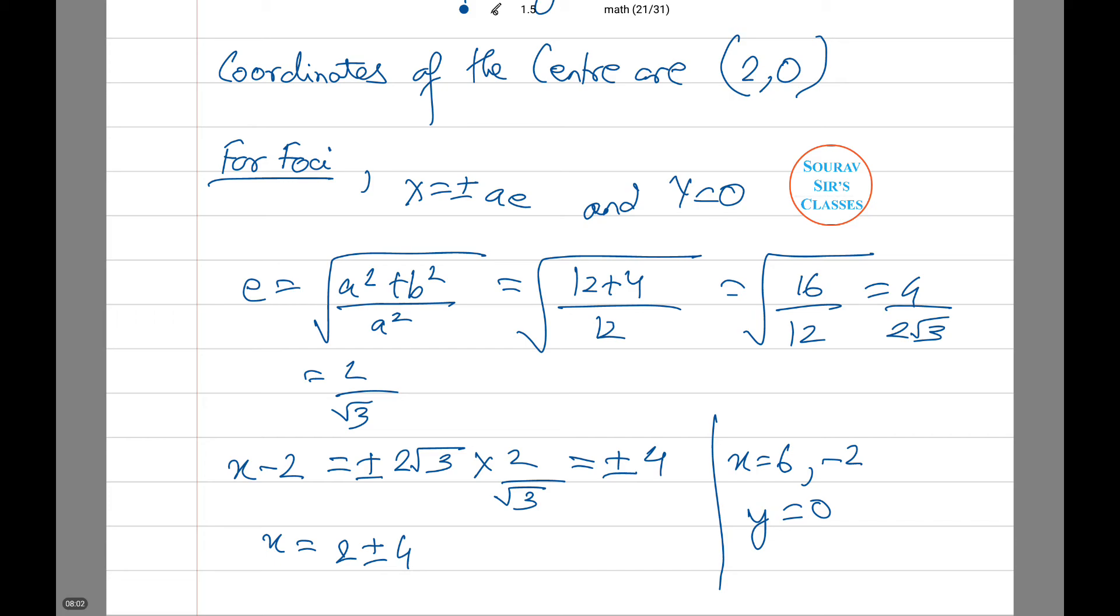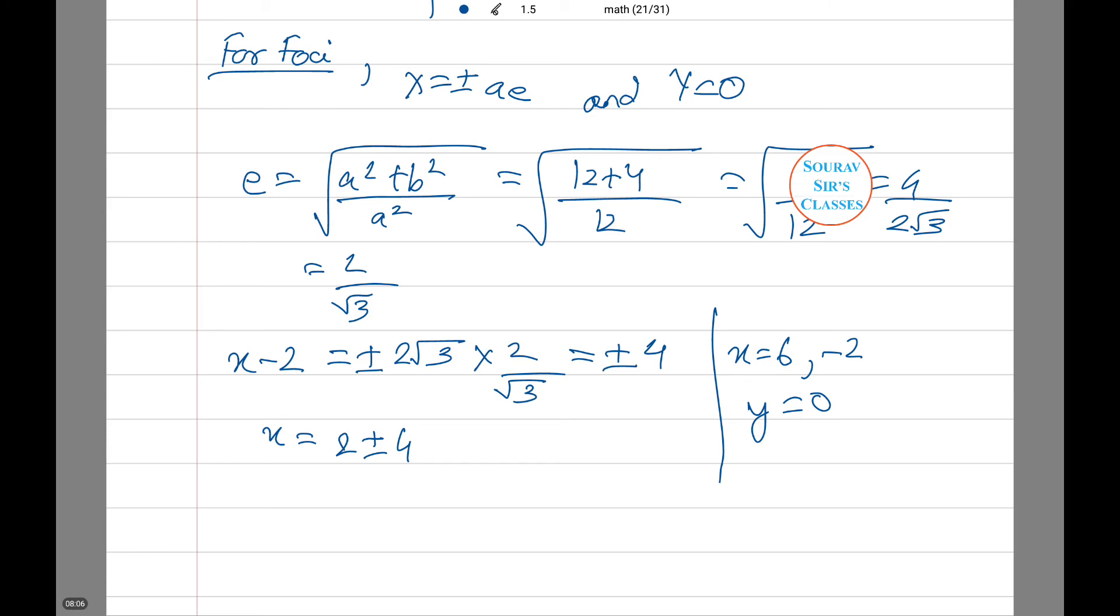Similarly we find the value of x which comes as 6 and -2, and y is equal to 0. Thus the coordinates of foci are (6, 0) and (-2, 0).